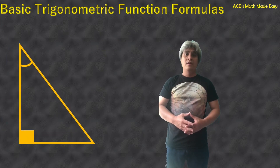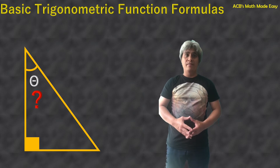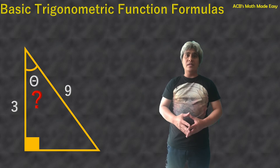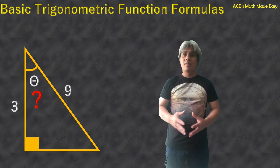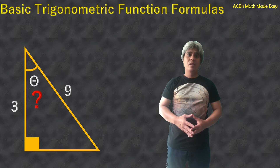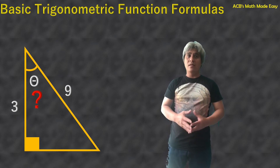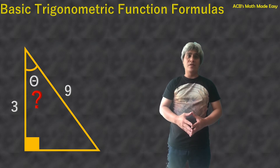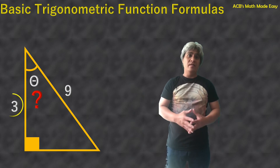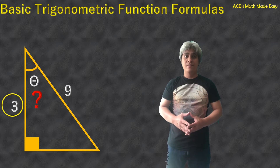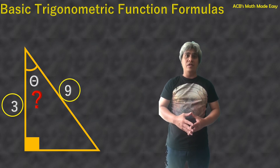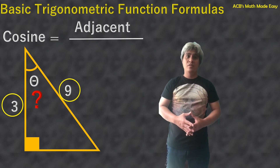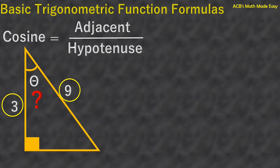This is the right triangle, and we are going to calculate the angle theta. The hypotenuse of the right triangle is 9 units, and the adjacent of the angle theta is 3 units. How are we going to get this angle? What is the trigonometric function formula that deals with adjacent and hypotenuse? Cosine deals with the adjacent and hypotenuse, so cosine is equal to adjacent over hypotenuse.